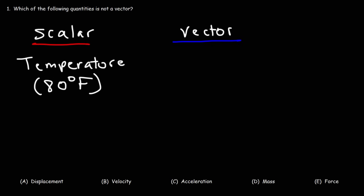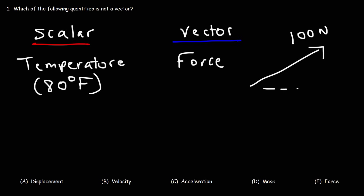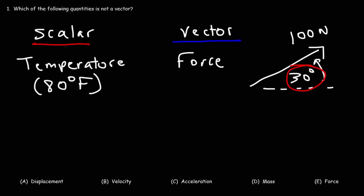You can't meaningfully say it's 80 degrees Fahrenheit east — that wouldn't be relevant. Force, for instance, is a vector, because you can describe it using magnitude and direction. For instance, you can have a force of 100 newtons directed at an angle of 30 degrees above the x-axis. So this is the magnitude of the force, and this is the direction of the force, which makes it a vector.